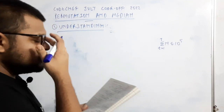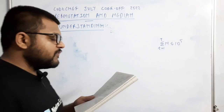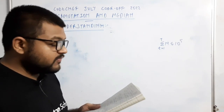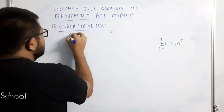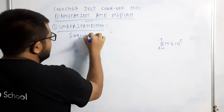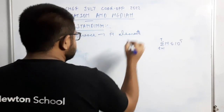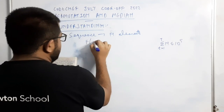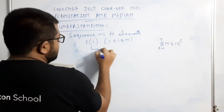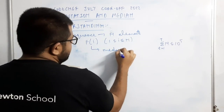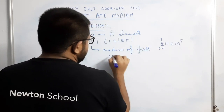As always, let's start by understanding the question. Given a sequence of n elements, Chef defines a function f(i) for all i from 1 to n as the median of the first i elements of the sequence. So we have a sequence and Chef computes f(i) where f(i) equals the median of the first i elements.